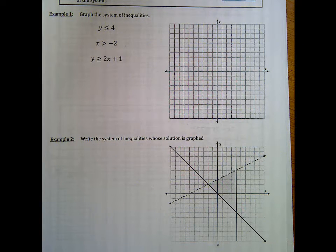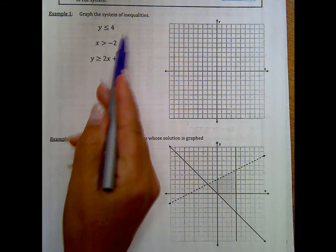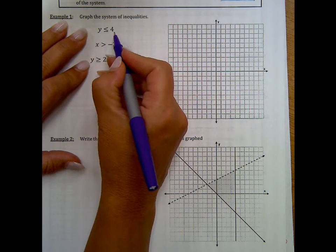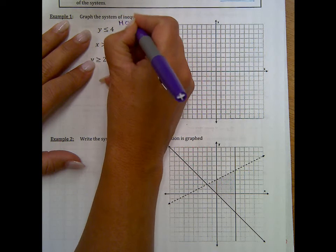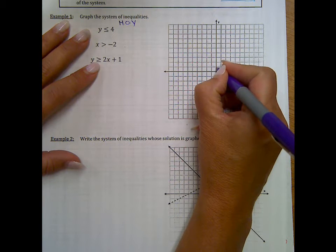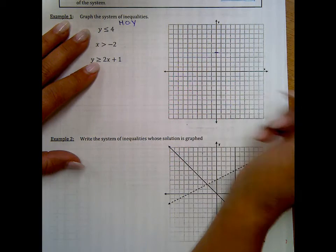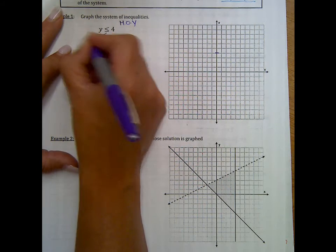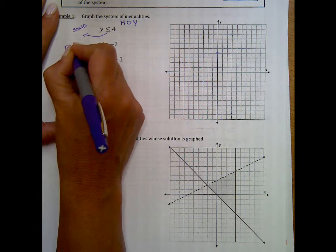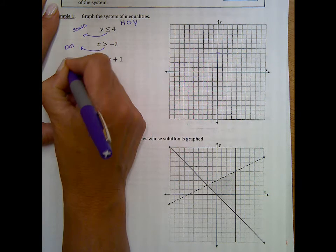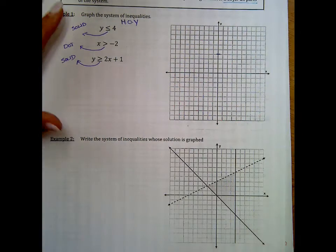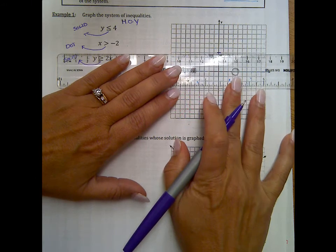We're going to first graph these all like they're lines: y = 4, x = -2, and y = 2x + 1. So y = 4 is a horizontal line with a zero slope, and y equals some number. We're going to go up and find where y equals 4. Make sure this is a solid line — it's a dotted line when it's not equal to. So we're doing a solid line where y equals 4. We should always use some kind of straight edge.